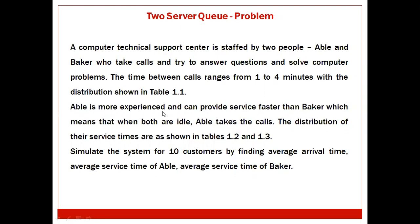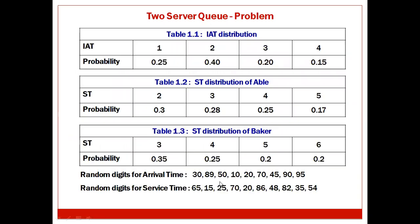Able is more experienced and can provide service faster than Baker, which means that when both are idle, Able takes the calls. The distribution of their service times are as shown in Tables 1.2 and 1.3. Simulate the system for 10 customers by finding the average arrival time, average service time of Able, and average service time of Baker.